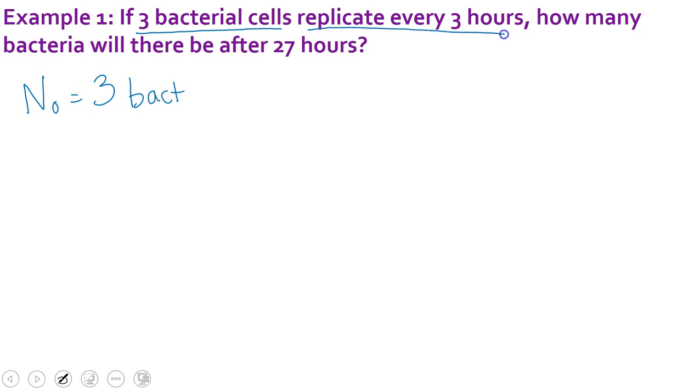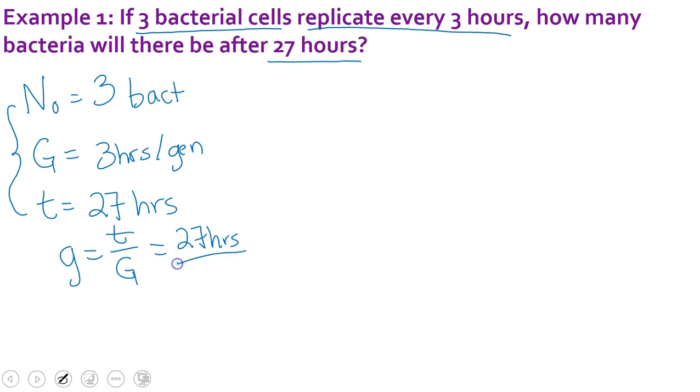Then we know that they replicate every three hours. Now remember that big G is our generation time. So big G equals three hours per generation. And then the last thing that we know is that we're looking at them after 27 hours. So our total time passed then is 27 hours. Now if we take a look at these, we don't have enough variables to start using the big equation. So we're actually going to start with our small equation to figure out little g first. So remember that little g equals t divided by big G. So in this case it equals 27 hours divided by three hours per generation. Now there's a reason that I'm carrying my units through. In science, we use our units the whole way through our problem so that we know we have the right units at the end. So we know that 27 divided by three is nine. And our hours divided by hours cancels out. Now when you divide by a denominator that is already in a denominator, it actually flips up to the top. So our little g then equals nine generations.